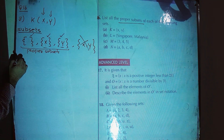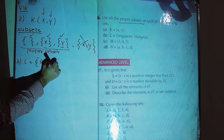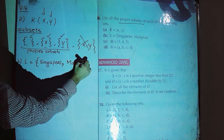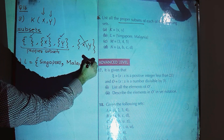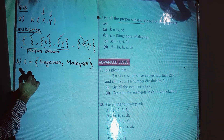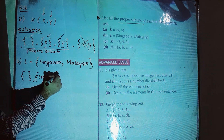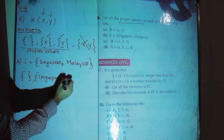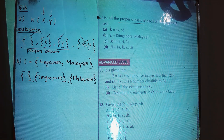Then we have part B — set L with elements {Singapore, Malaysia}. The empty set is a proper subset of this set. Then {Singapore} is a proper subset — it is part of the set and the set has one extra element. Then {Malaysia} is also a proper subset. These three are the possible answers for part B.